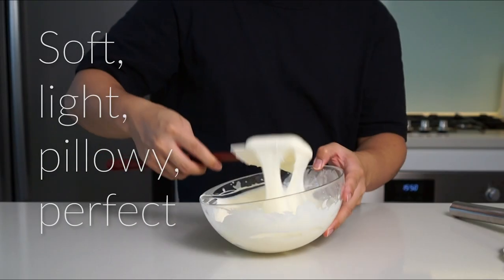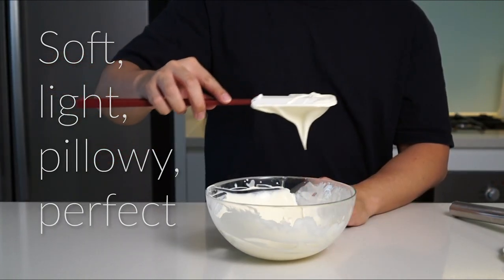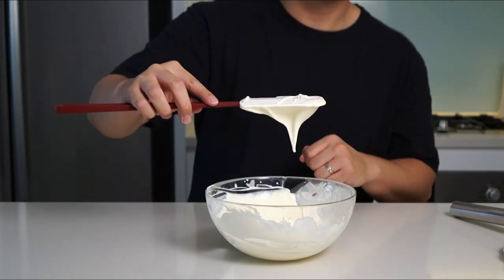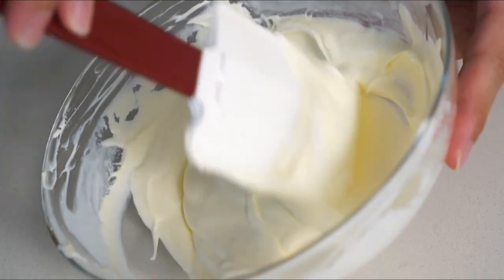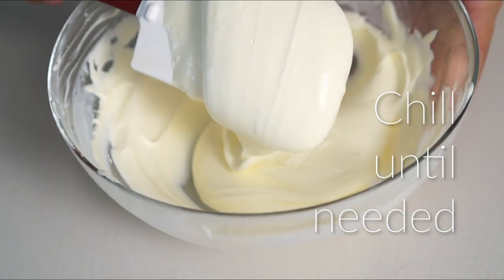It should be soft and pillowy, and when you turn it upside down from the silicon spatula it should form a peak. This is the ideal texture for our mousse. This will allow you to evenly incorporate it with the ganache and leads to a light and fluffy mousse. Once you've reached this texture, you can go ahead and store it in the fridge.